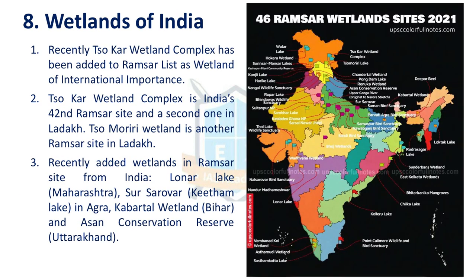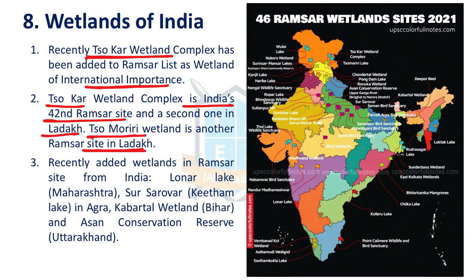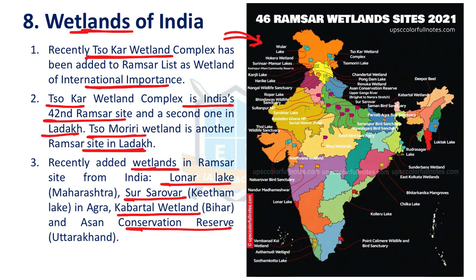The next issue is wetlands of India. Under the Ramsar Convention, the Tsomoriri wetland complex is declared a Ramsar site of international importance. It is India's 42nd Ramsar site and the second one in Ladakh — the first being the Somoriri wetland. Recently added wetlands include Lonar Lake, Sur Sarovar (Agra), Kabartal Wetland in Bihar, and Asan Conservation Reserve in Uttarakhand. By December 2020, there were 42 Ramsar sites in India; as of now there are 46.